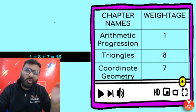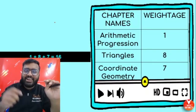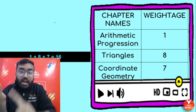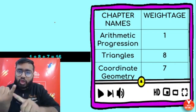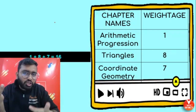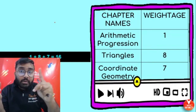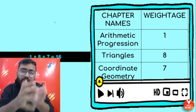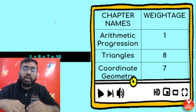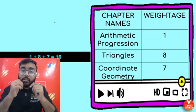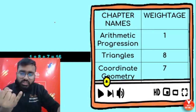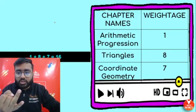Arithmetic Progression — no tension, chill! Triangles is very important and carries 8 marks. The most important things here: BPT theorem must be done very well, and all four similarity criteria should be memorized thoroughly. Possibilities include 3 marks from BPT, 3 marks and 2 marks from other areas. Be prepared with BPT and the theorems that follow.